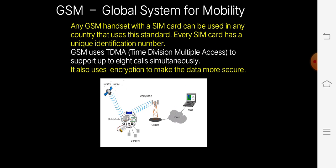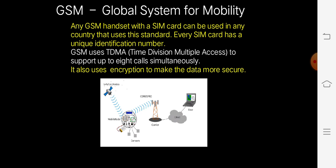Look at the picture given. There is a user, a carrier, sensors, and a GPS. The sensors and the GPS are always connected with the carriers. Whenever we are connecting with the carrier, we can have GSM provisions. Any GSM handset with a SIM card can be used in any country that uses the standard. Every SIM card has a unique identification number. GSM uses Time Division Multiple Access, or TDMA, to support up to 8 calls simultaneously.